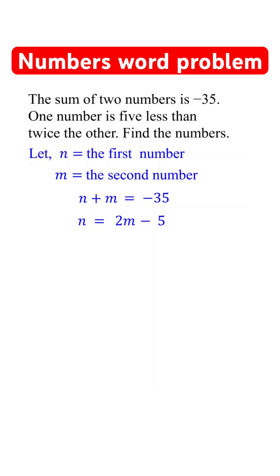Now solve the system of equations. Substitute this expression for n in the first equation. Combine like terms. Add 5 on both sides of the equation. Then divide each side of the equation by 3.